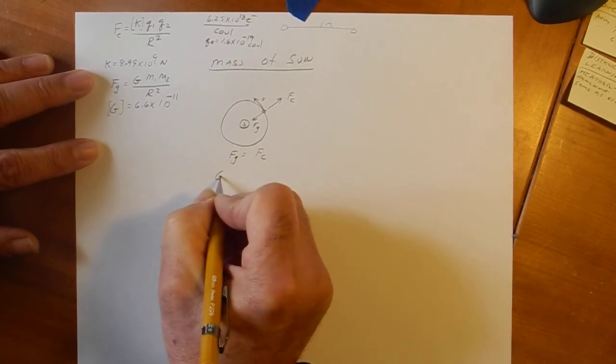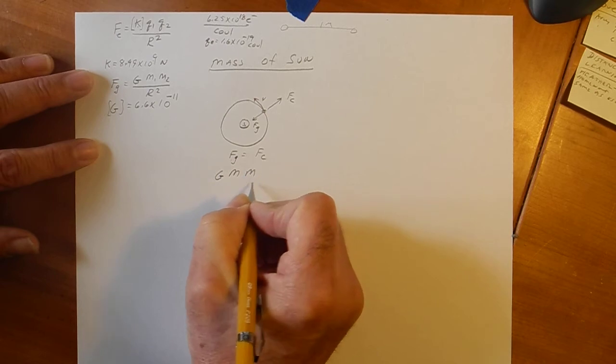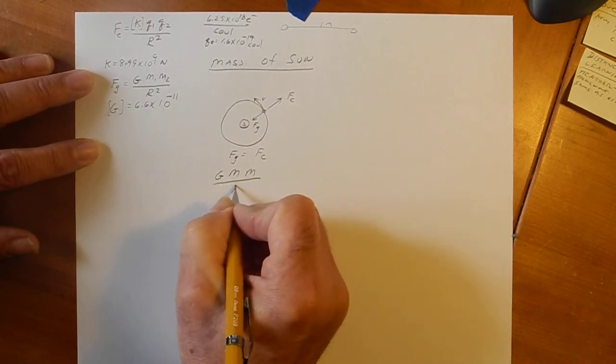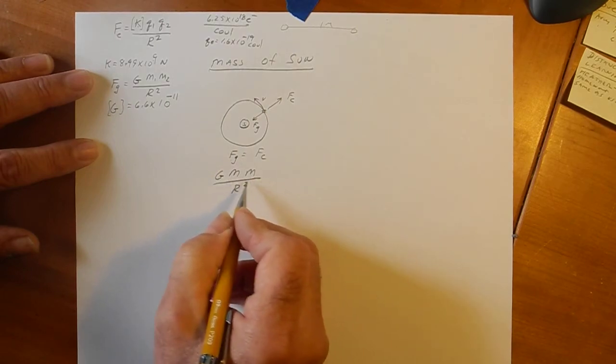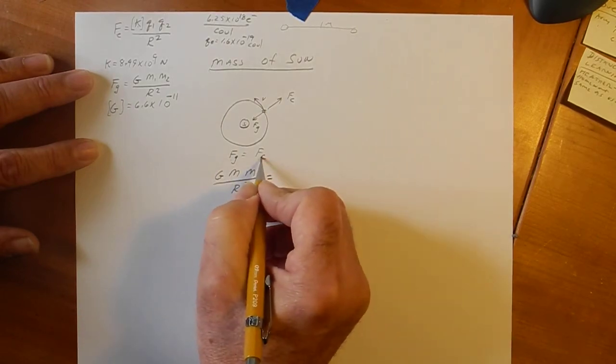And we have, for F sub G, G, M1, M2, divided by the radius between them squared, M1, M2. I'll label those in a minute. Has the equal to centrifugal force. Well, what are our choices?